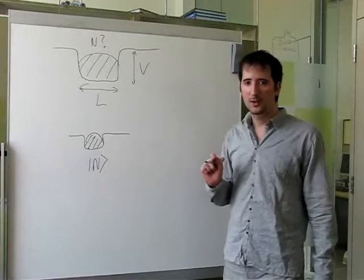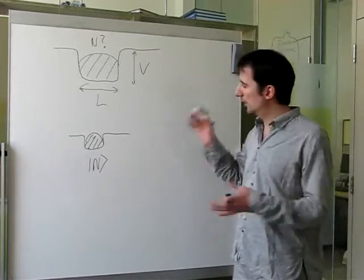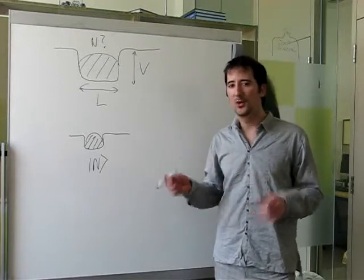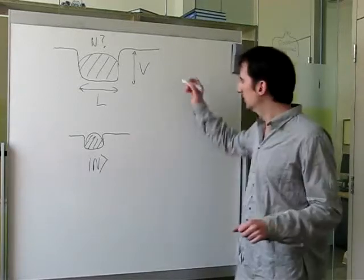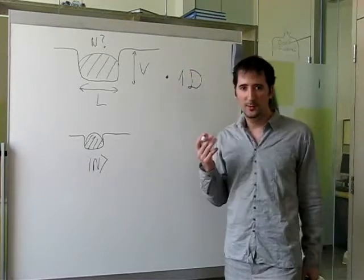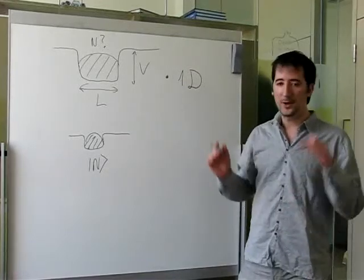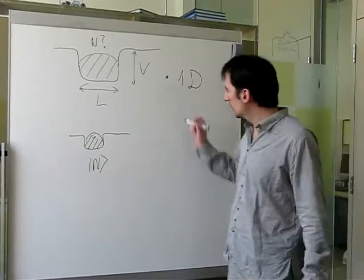For this to work, it turns out that it's a very nice idea to work with systems which are quasi-one-dimensional. So these will be one-dimensional systems, and this ensures high robustness with respect to variations in the trapping potential.